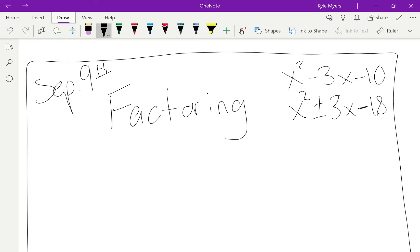So we are doing three problems today. We've got x squared minus 3x minus 10 and x squared plus 3x minus 18 and x squared minus 3x minus 18. So that's a total of three problems today. So let's just dive right in.